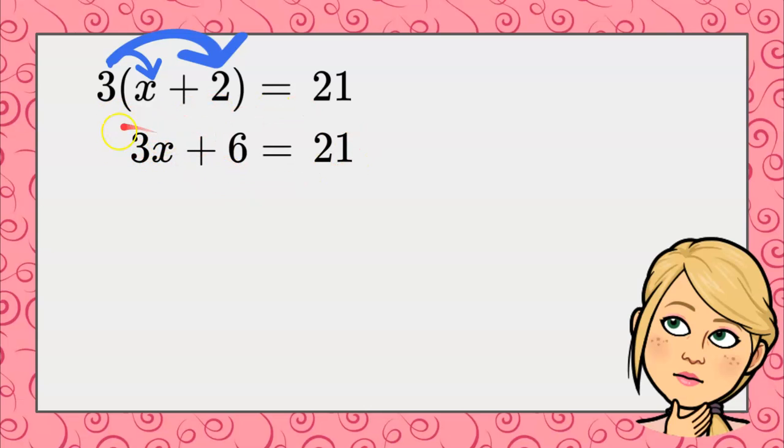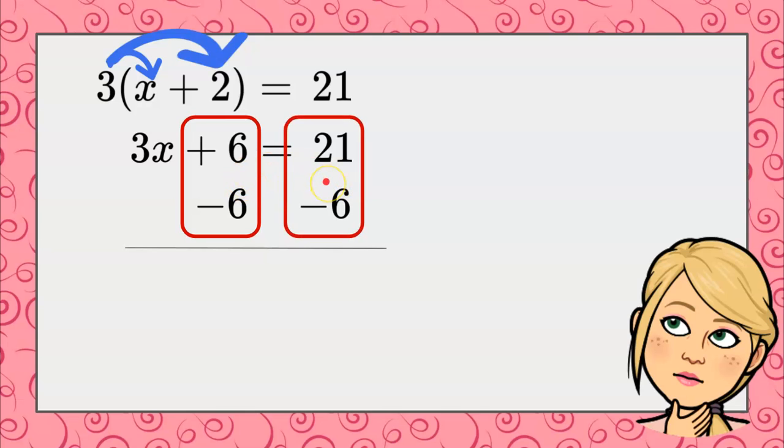Now I'm going to isolate the variable term by subtracting 6. That is the inverse of add 6, using the subtraction property of equality on both sides of the equation. This will give me 3x because that is a zero pair, and 21 subtract 6 is 15.